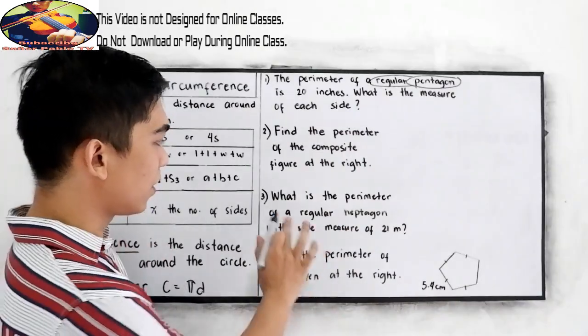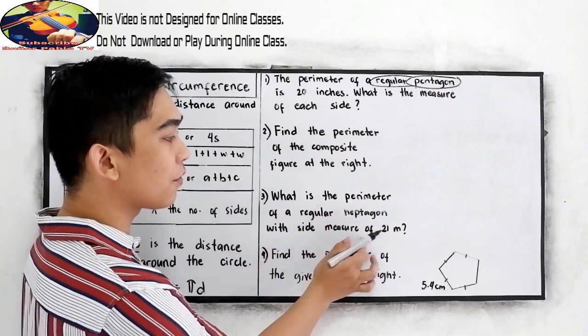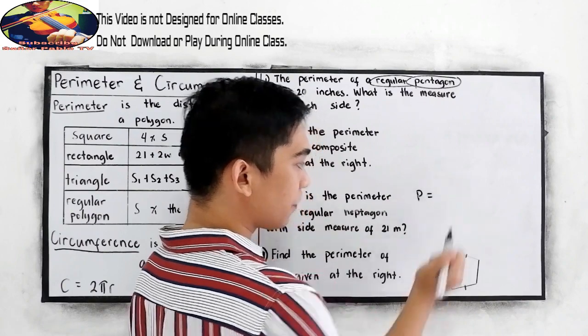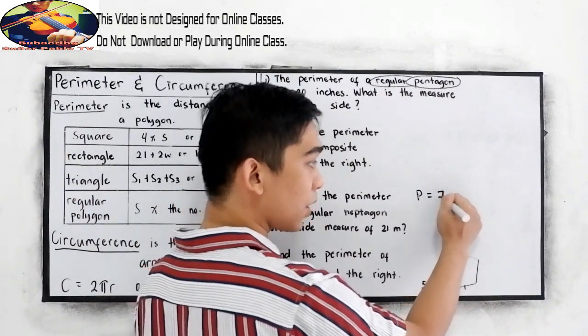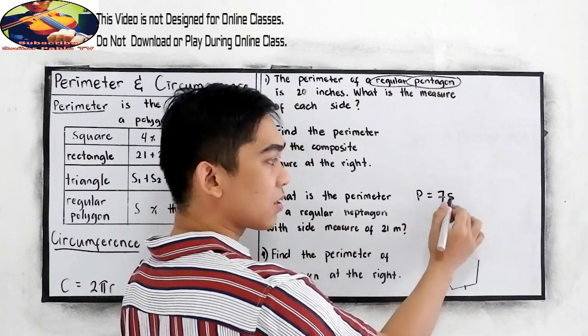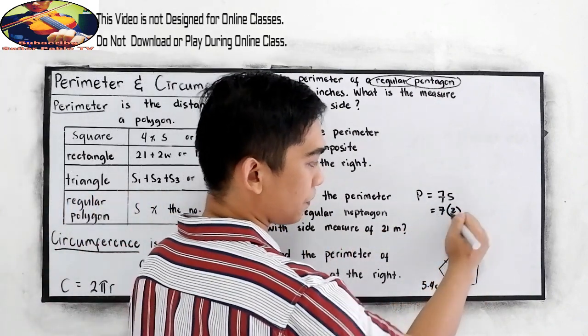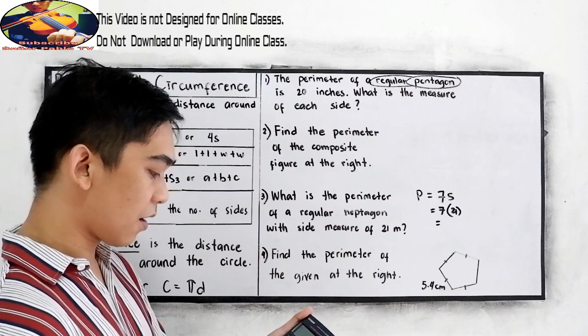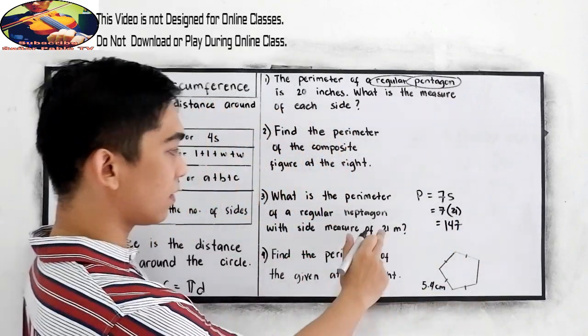Now number three: what is the perimeter of a regular heptagon with side measure of 21 meters? So we're going to find the perimeter, regular heptagon. So seven-sided polygon. So perimeter is equal to the number of sides times the measure of each side: 7 times 21. So 7 times 21 is 147. 147 meters.